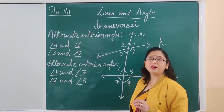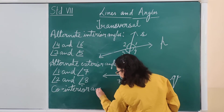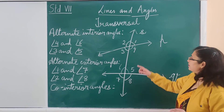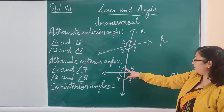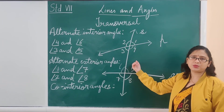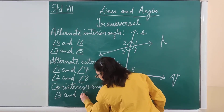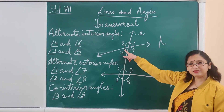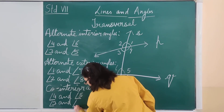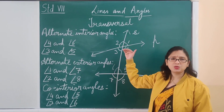The next type of angles are co-interior angles, meaning interior angles which are on the same side of the transversal. The interior angles are angle 3, angle 4, angle 5, and angle 6. Angle 4 and angle 5 are the interior angles on the right side of the transversal, so they are known as co-interior angles. Similarly, angle 3 and angle 6 are also co-interior angles. These are all the angles formed by a transversal when it intersects two or more given lines.